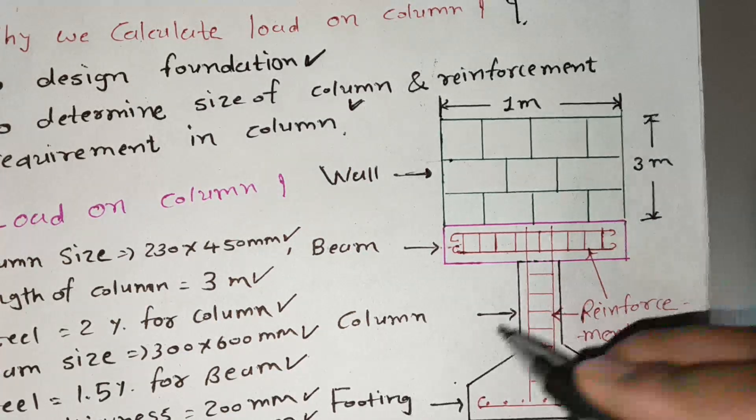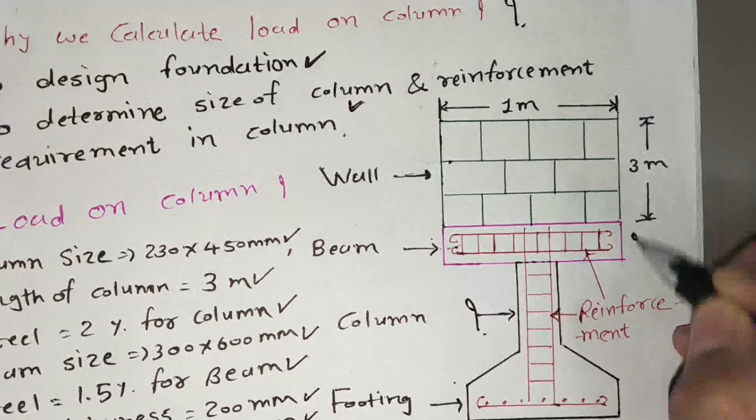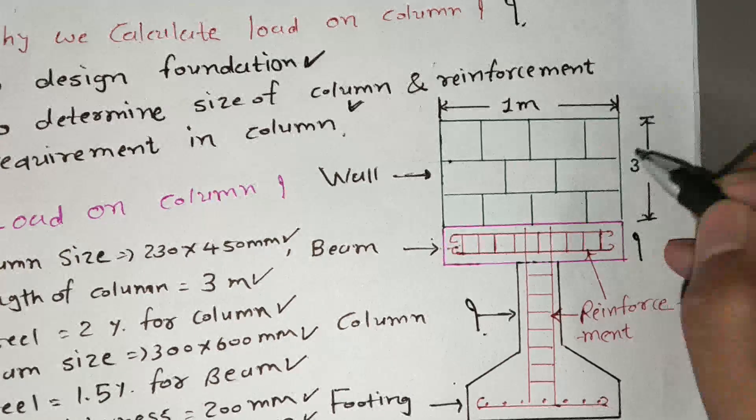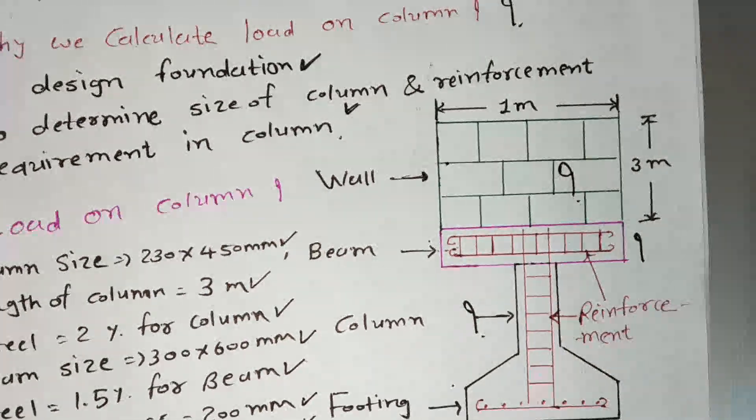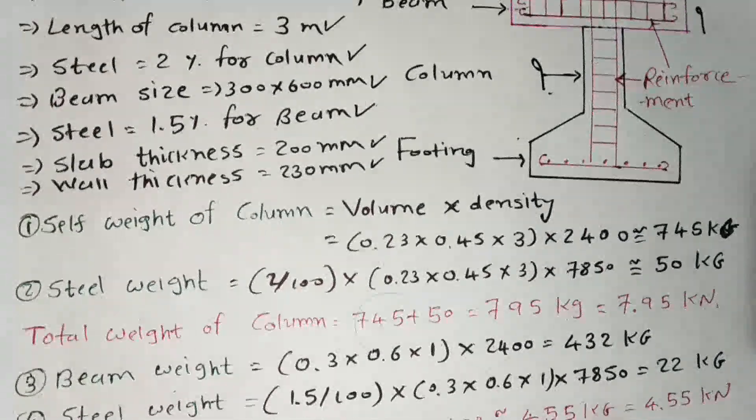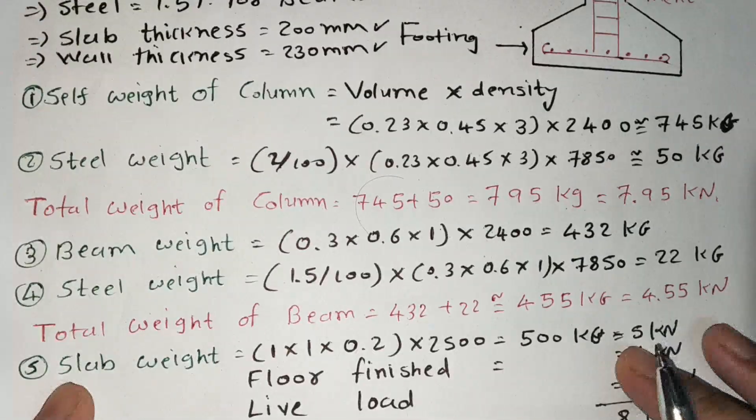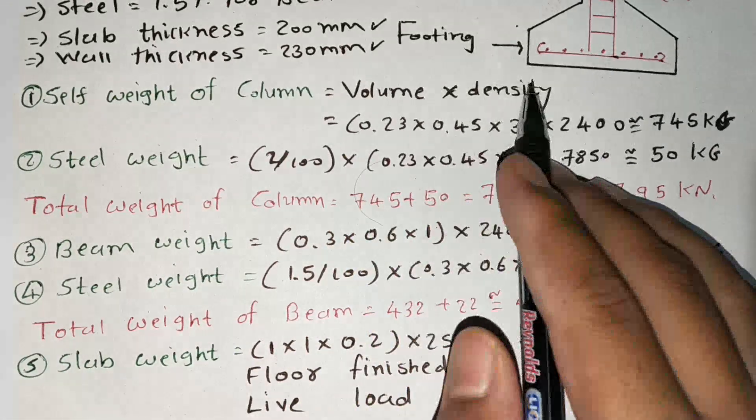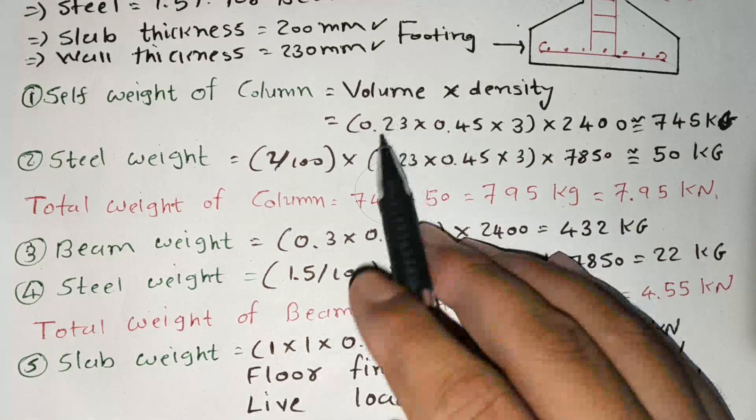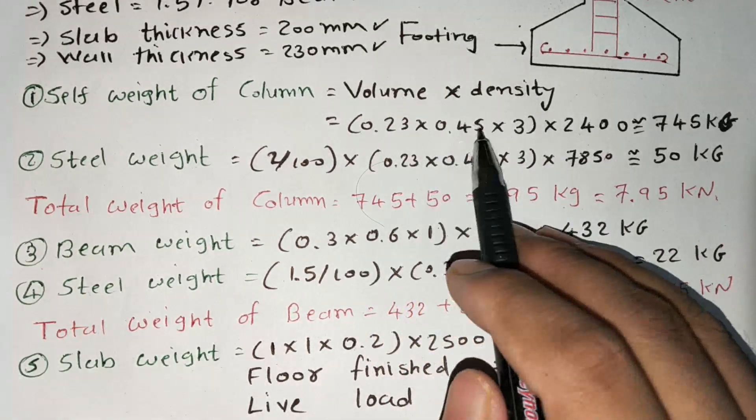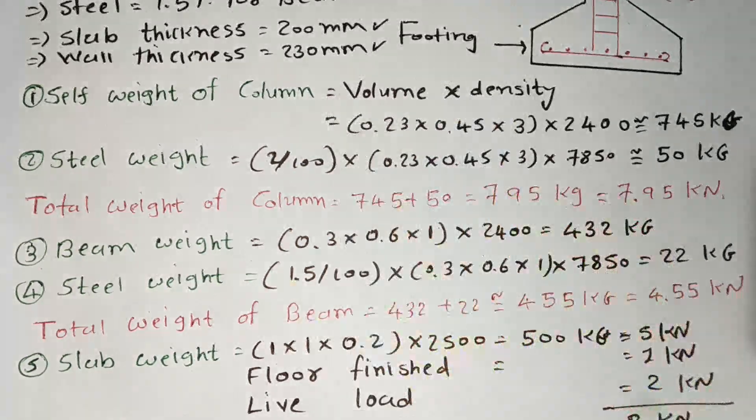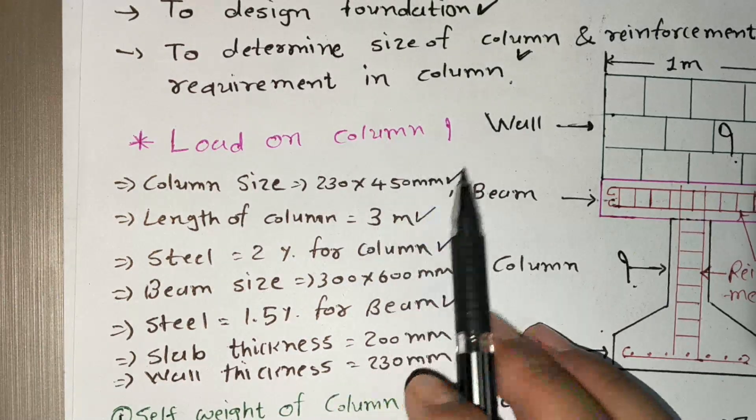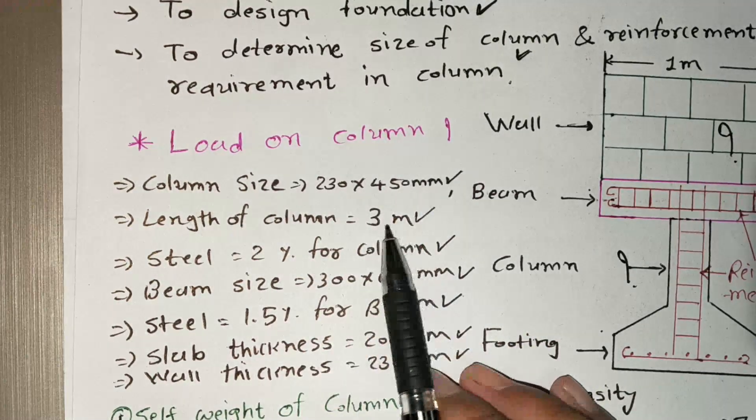We have to calculate the column weight, then beam weight, then slab also included but we can't see behind the beam. So the wall weight, first of all, self weight of column. Everyone knows the equation: volume times density. Here the column dimension is 0.23 x 0.45 meter and 3 is the height. Column size 230 x 450 mm, I converted into meter and the length of column in meter.